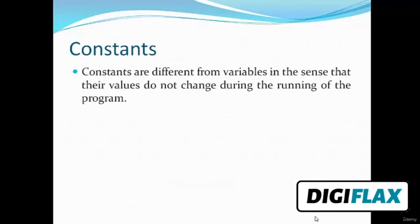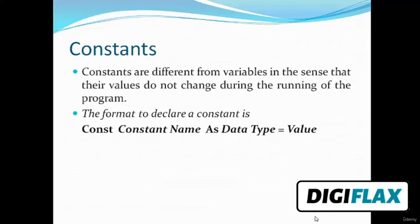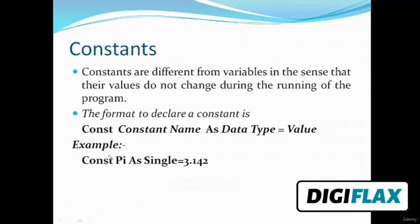Now let's see constants. We have already seen variables and how to declare them. Constants are different from variables in that their values do not change during the running of the program. The format to declare a constant is: write the Const keyword, then the constant name, the As keyword, the data type, and assign a value using the equals operator. For example, Pi is declared as a Single data type with its value. Thank you.